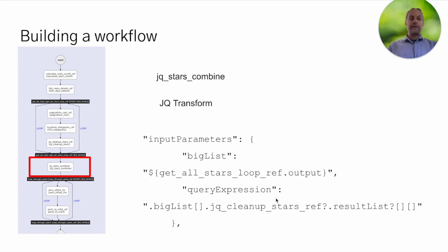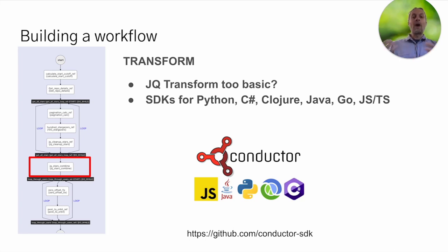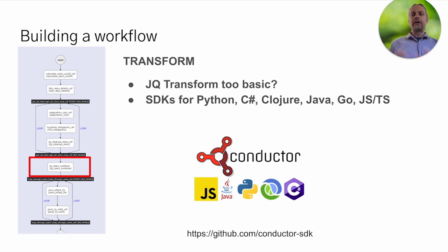I'm using JQ transforms here, and this is probably not the way most people deal with huge data sets — it might be too much for JQ to handle. So if the JQ transform is too basic, we have SDKs. Each one of these tasks doesn't have to be a system task like the JQ transform. You could write your own Python, C#, Clojure, Java, or Go microservice — and coming soon, JavaScript and TypeScript. We have SDKs that let you write microservices to do whatever you need with the data, whether it's extraction, transformation, or loading.